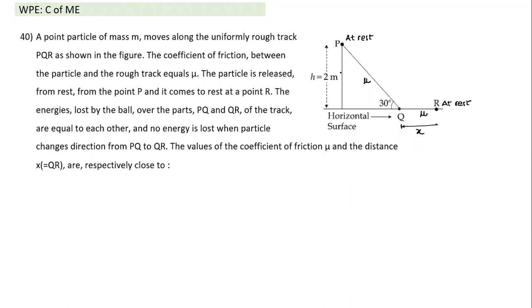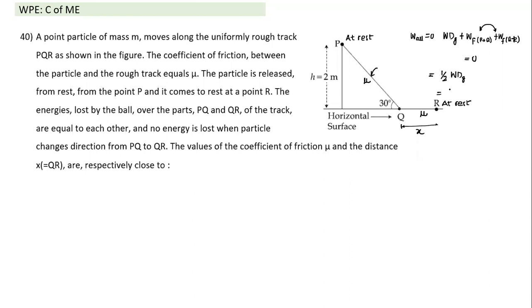From rest at P to rest at R, change in KE = 0. So work done by all forces = 0: W_gravity + W_friction(PQ) + W_friction(QR) = 0. Given that energy lost due to friction on PQ equals energy lost on QR, each equals half the work done by gravity. W_gravity = mg × 2 = 2mg.